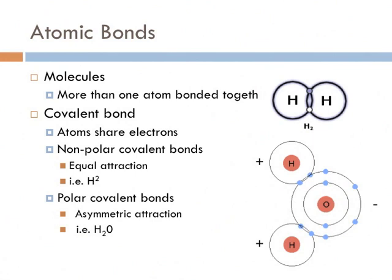The structure of the atom is just the beginning. What's really interesting is how they combine. Molecules are more than one atom bonded together. We're going to talk about covalent bonds. Covalent bonds are atoms that share electrons. First is non-polar covalent bonds. These bonds have an equal attraction and are symmetrical. An example is hydrogen molecule, H2, which is 2 hydrogens together sharing a single electron. They both have a full electron shell on the outside.